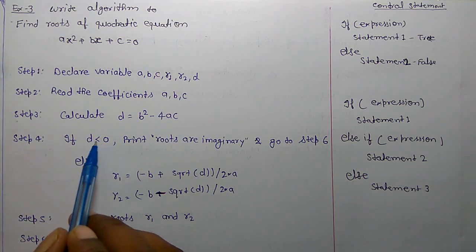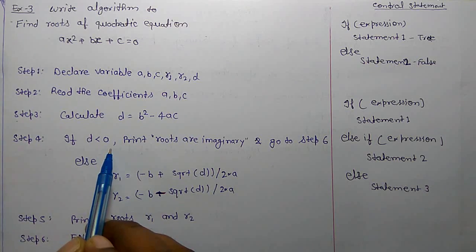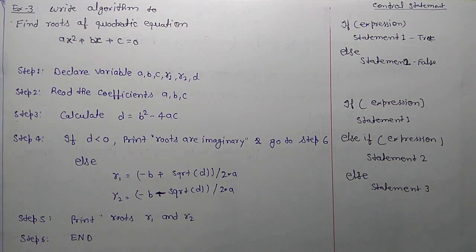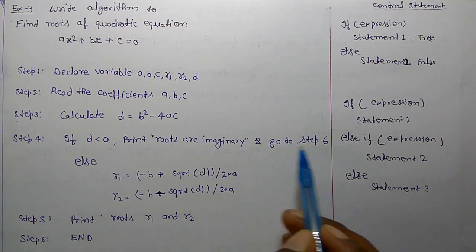And step 4, if d is less than 0, print roots are imaginary and go to step 6. Step 6 is end. So if roots are imaginary, then directly it will jump from this place and it will skip these in-between steps.